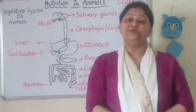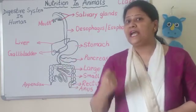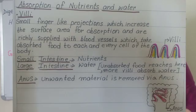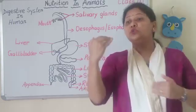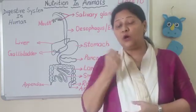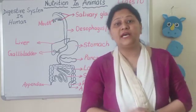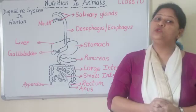Toh absorption mein kya hota hai — small intestine mein finger-like structure hota hai jis ko hum villi kehte hain, jo surface of absorption ko bada karta hai. Jab digestion ho gaya, toh jo useful substance hai woh absorb hoga bloodstream mein. Villi ke andar blood vessels hota hai, jo usko absorb karta hai — blood stream mein usko absorb karega small intestine mein.